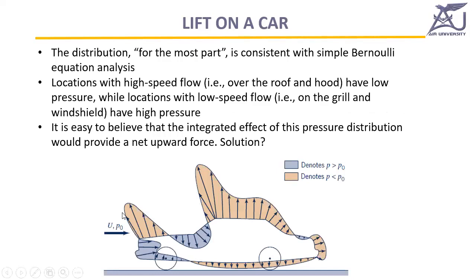For a car, there is a pressure distribution. Some regions are low pressure and some are high pressure. Certain pressure zones mainly dictate drag, while others dictate lift. Overall, low pressure zones are more prevalent on the upper surface, which is why an upward lift is produced on a car. We counter this using a spoiler, which creates a stagnation point with high pressure and produces a downward force due to the pressure difference.